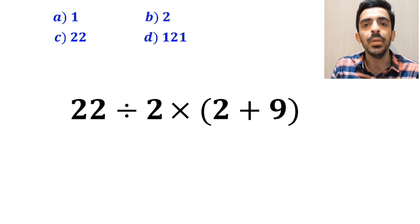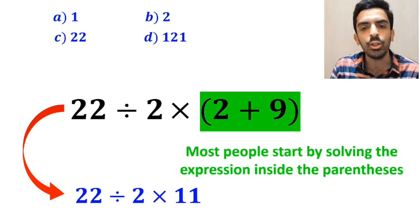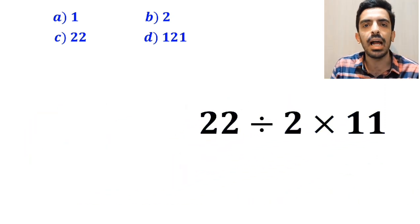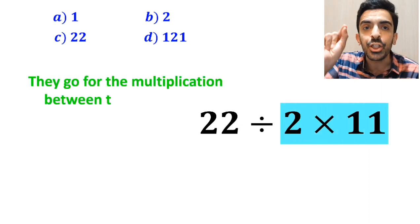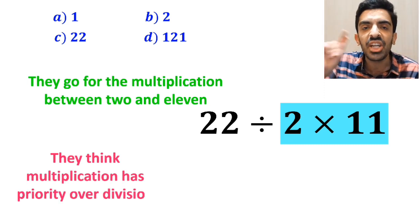And the first step, most people start by solving the expression inside the parenthesis and replace it with 22 divided by 2 multiplied by 11. And the next step, they go for the multiplication between 2 and 11 because they think multiplication has priority over division.